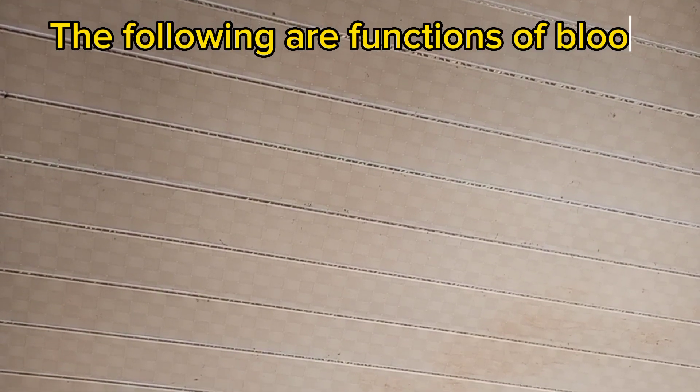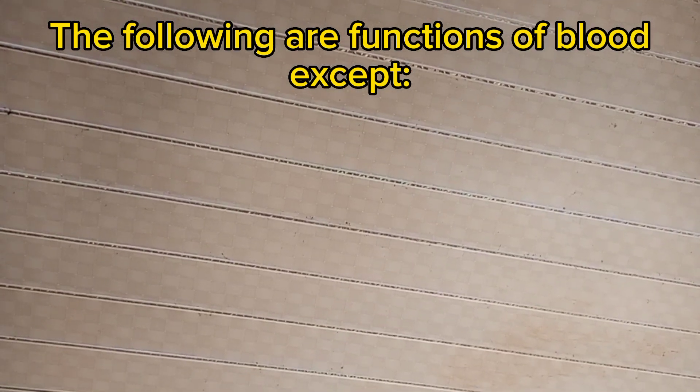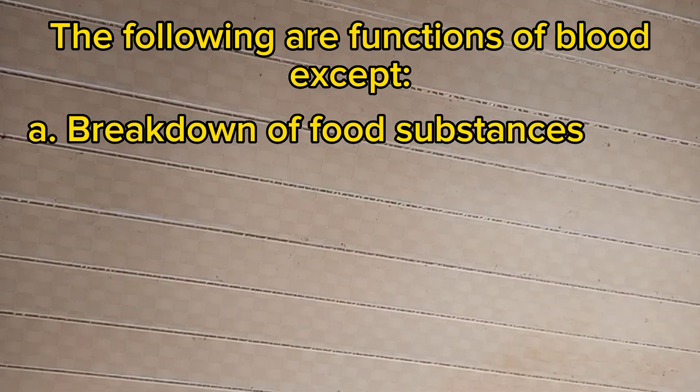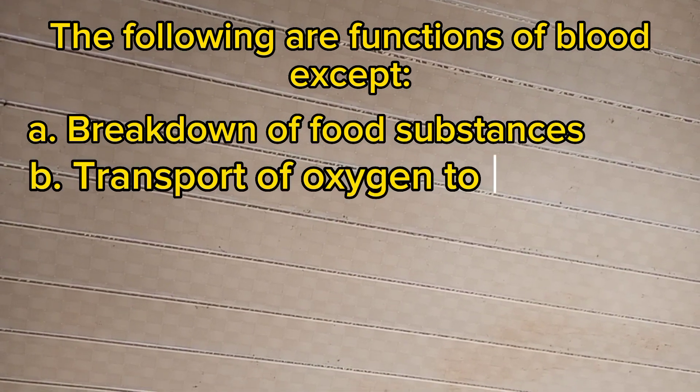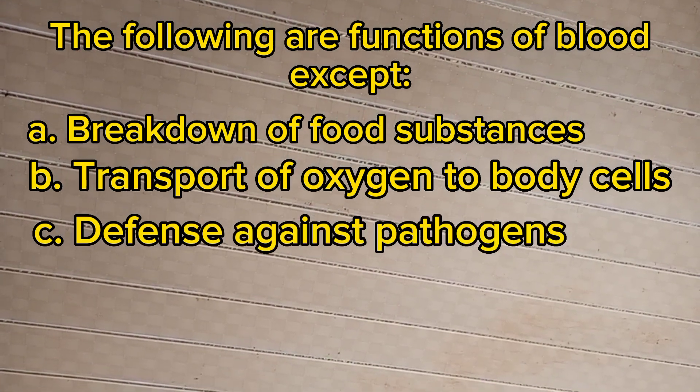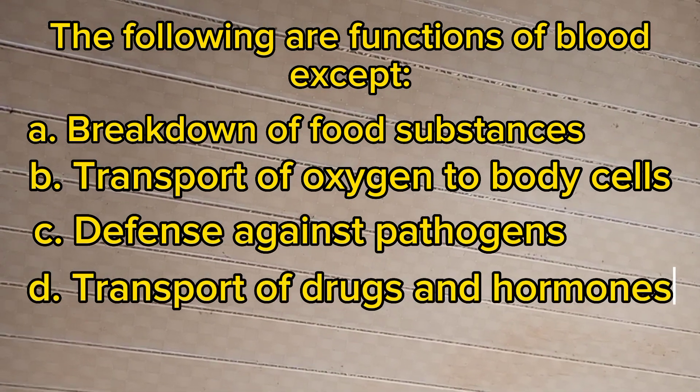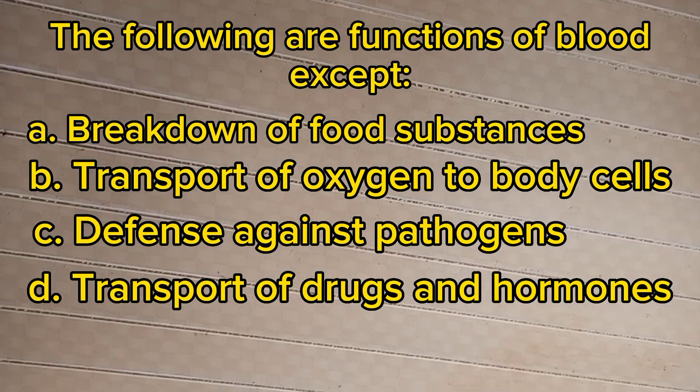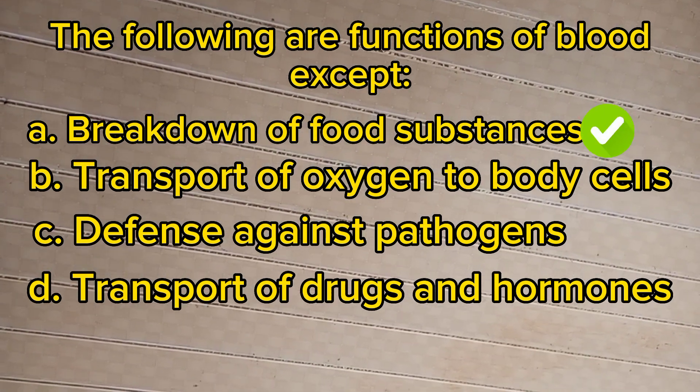Number two: The following are functions of blood except: A. Breakdown of food substances, B. Transport of oxygen to body cells, C. Defense against pathogens, D. Transport of drugs and hormones. The answer is A, breakdown of food substances.